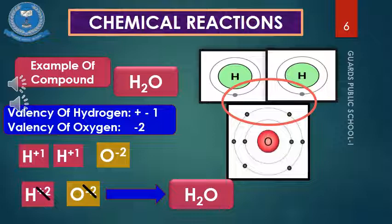An important point: whenever a compound is formed, there are at least two elements involved. The first element participating in compound formation always has a positive valency, and the second element always has a negative valency. This is a very important point to keep in mind: whenever a compound is formed, the first element always has a positive valency and the second element always has a negative valency.